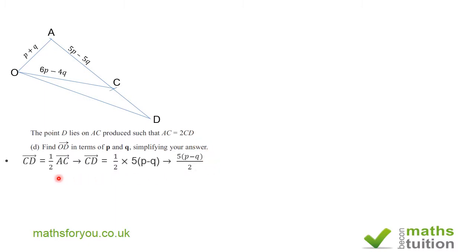So CD is a half AC. What you then do is CD is a half of 5(P minus Q). If we tidy up, it becomes 5(P minus Q) divided by 2.